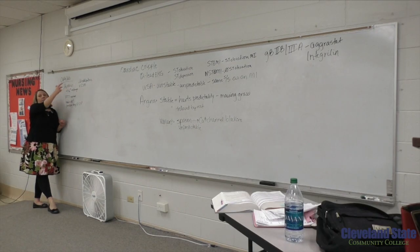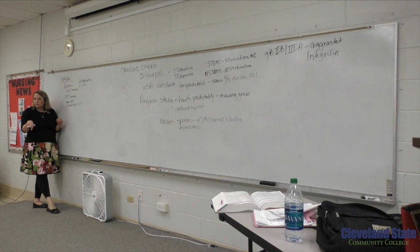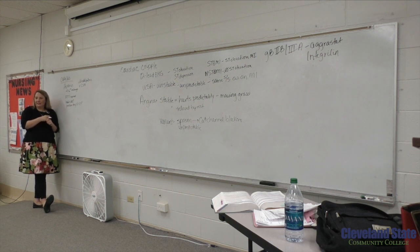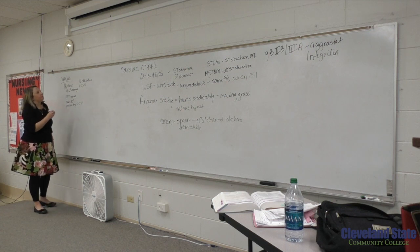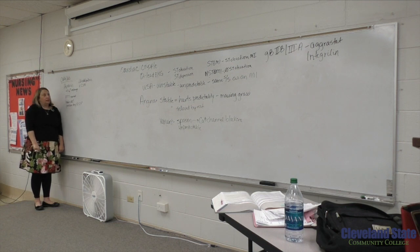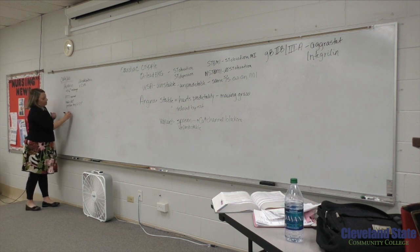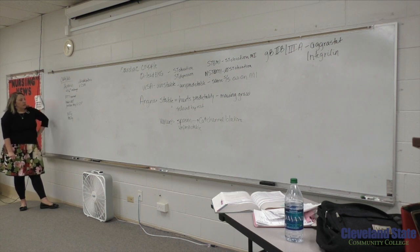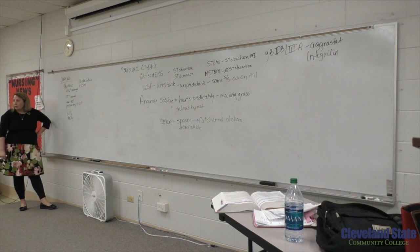Check all this before they go to the cath lab so you know if there are any differences afterward. If you can't feel a pulse, get a Doppler. If you can't Doppler it, call the doctor and they'll call a vascular surgeon and the patient may need surgery again. They may still have chest pain even after it's been fixed, so they'll probably still need nitroglycerin and may need morphine. They'll get repeat 12-lead EKGs and stay on the monitor, then get up and walk around to make sure the site doesn't pop open, and then they can go home.